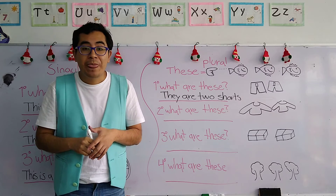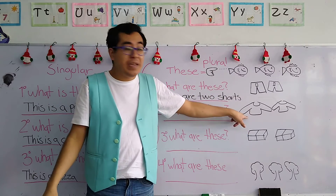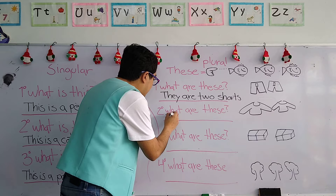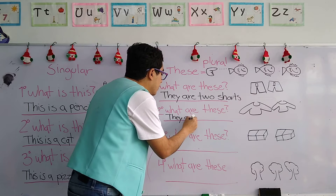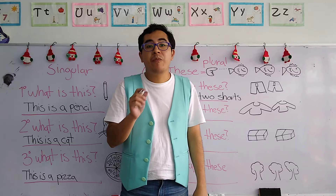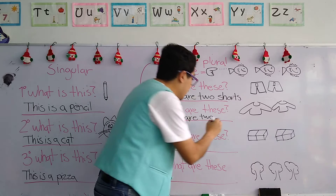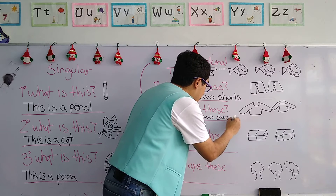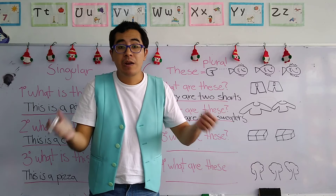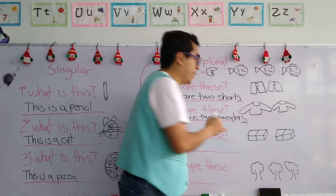Let's continue with number two. Remember the question: 'What are these?' ¿Qué son estos? Remember the answer: 'They are...' Let's count — one, two. The number with a letter: they are two sweaters. Don't forget that because we're talking about plural, como estamos hablando de objetos en plural, no se les olvide agregar la S al final.